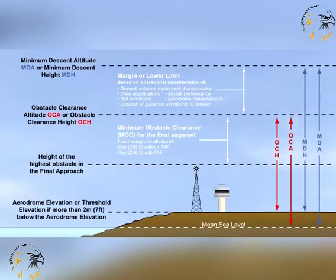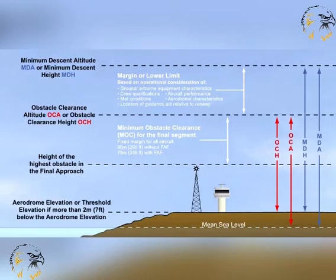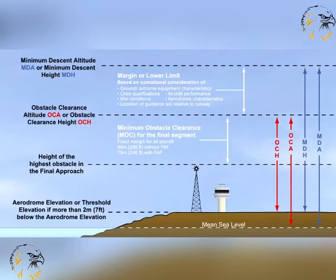The OCA or H for a non-precision approach procedure is defined as the lowest altitude, or height above the aerodrome elevation of the relevant runway threshold — if the threshold is more than 7 feet below the aerodrome elevation — below which the aeroplane cannot descend without infringing the appropriate obstacle clearance criteria. This is very similar to the definition of minimum descent altitude or height, MDA or H, for a non-precision approach: the lowest altitude or height above the aerodrome elevation or the relevant runway threshold, if the threshold is more than 7 feet below the aerodrome elevation, below which the aeroplane cannot descend without seeing the required visual references. Not descending until visual will ensure compliance with OCA or H criteria.